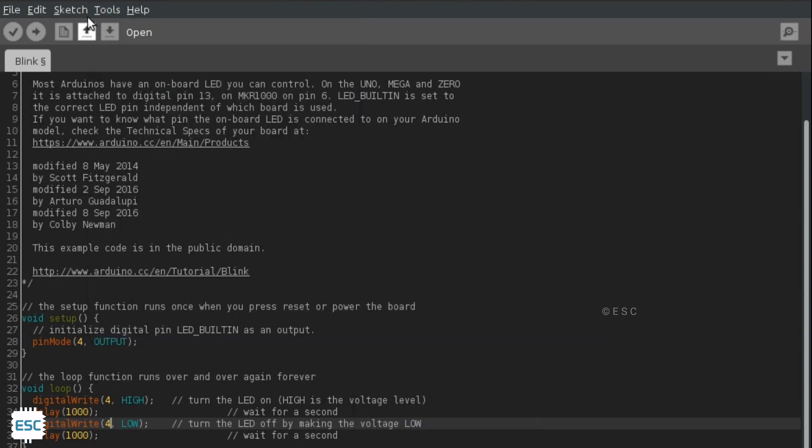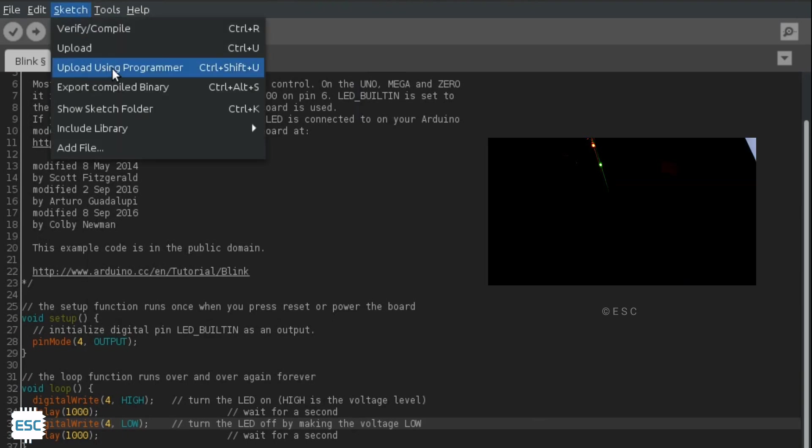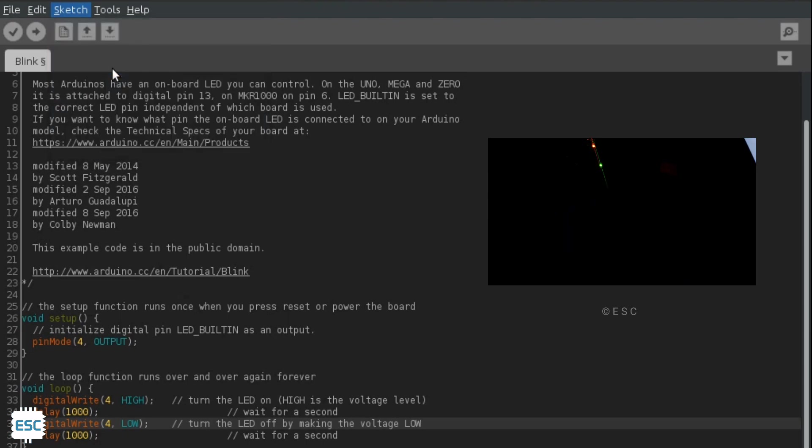Now click on Sketch and select Upload Using Programmer, or press Ctrl+Shift+U. Now you can see the code is uploaded and LED started to blink.